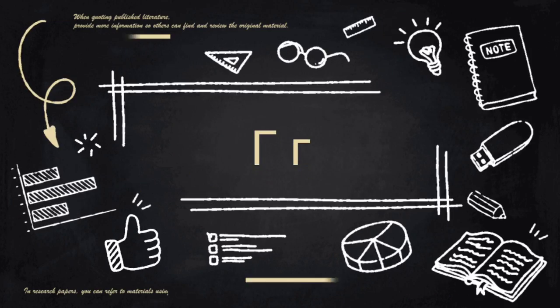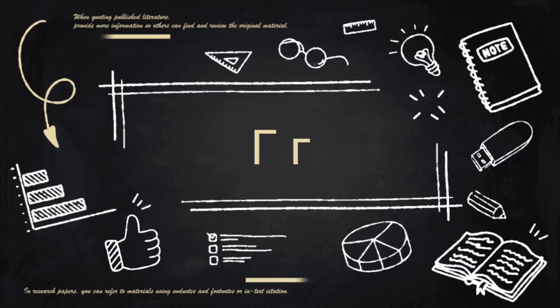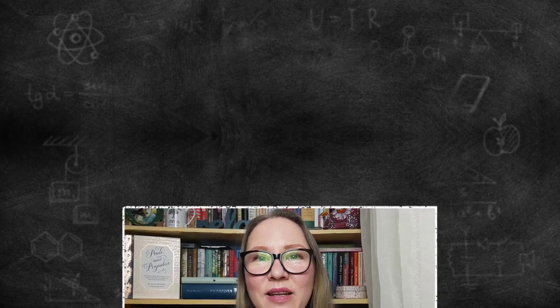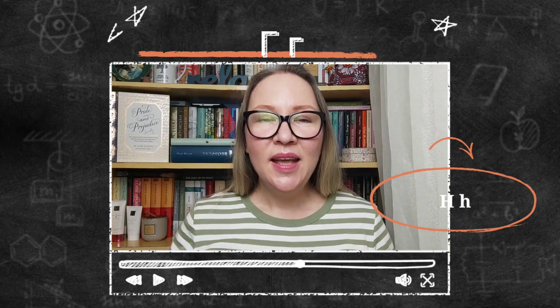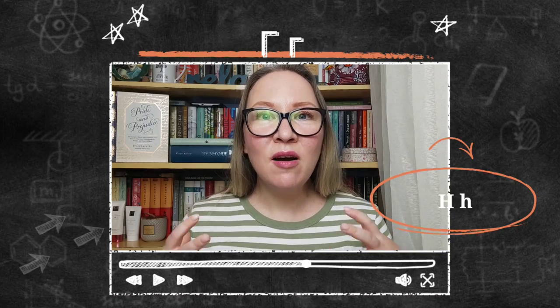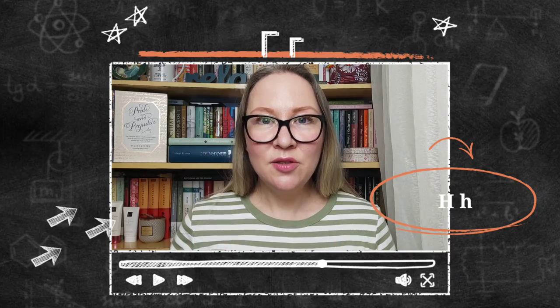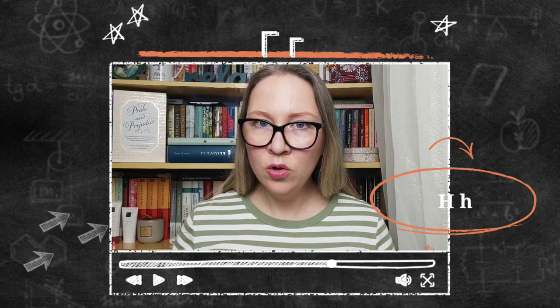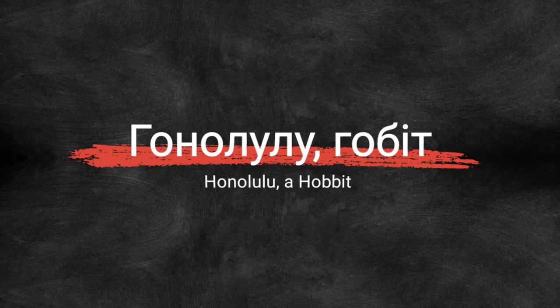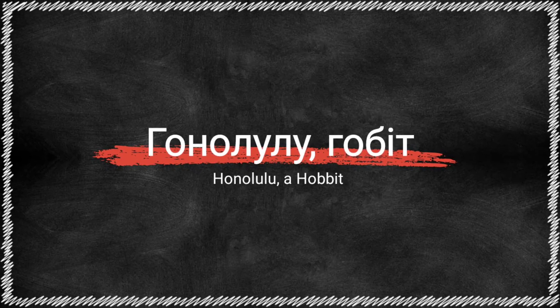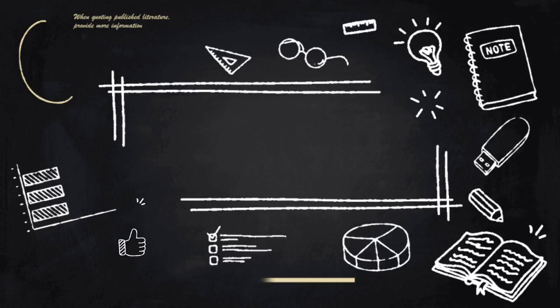Next is Г. Г is special — we pronounce it in a very unique way. In Ukrainian, Г sounds like the English «h» but with more voice in it. It's a breathy voiced counterpart of the English «h». Let's try together: «Гонолулу» — Honolulu, «гобіт» — Hobbit. Repeat after me: «Гонолулу», «гобіт».